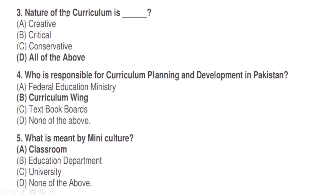The nature of the curriculum is: correct option D — all of the above, meaning (a) creative, (b) critical, and (c) conservative — all three are correct. Who is responsible for curriculum planning and development in Pakistan? Correct option B — Curriculum Wing.